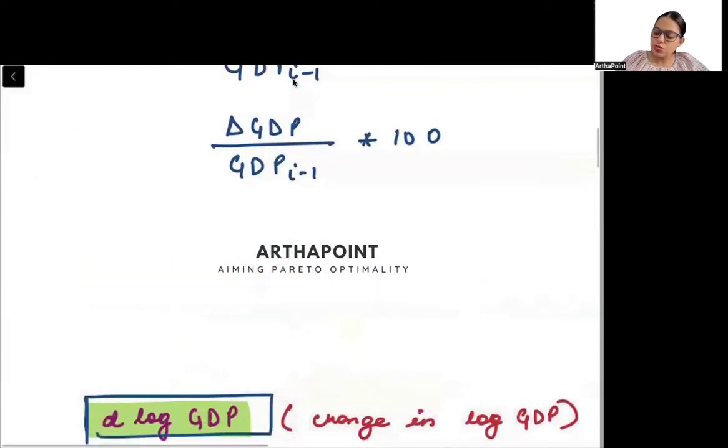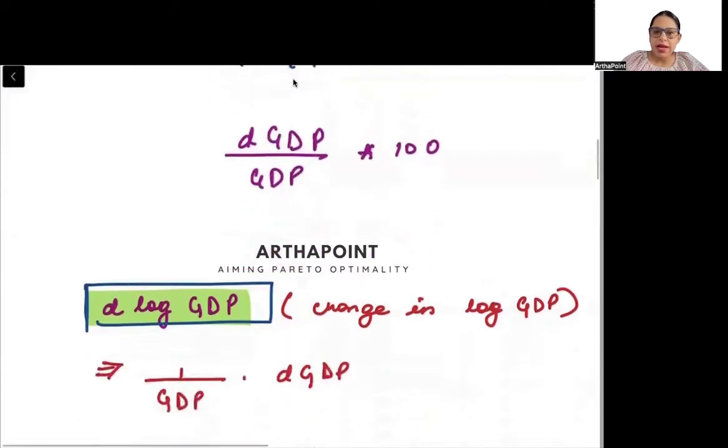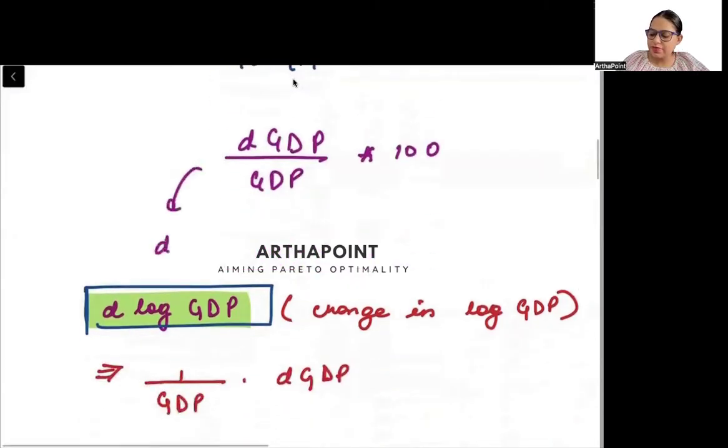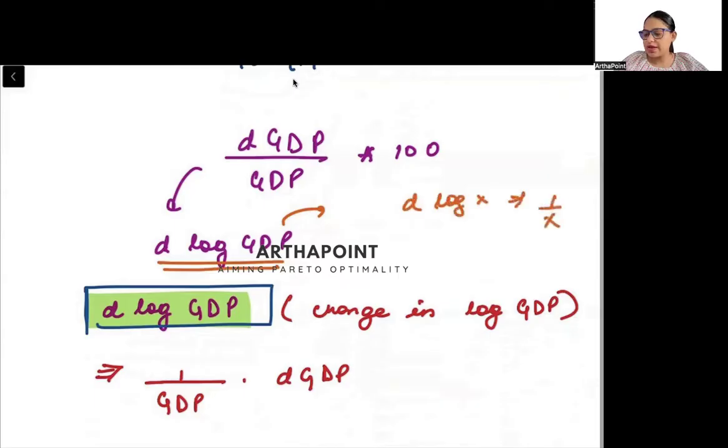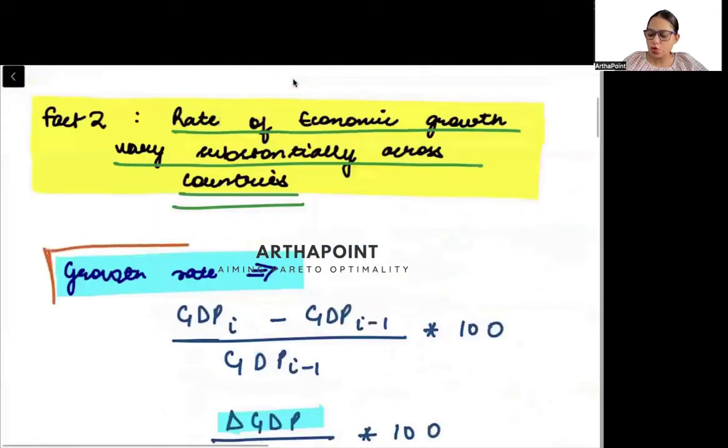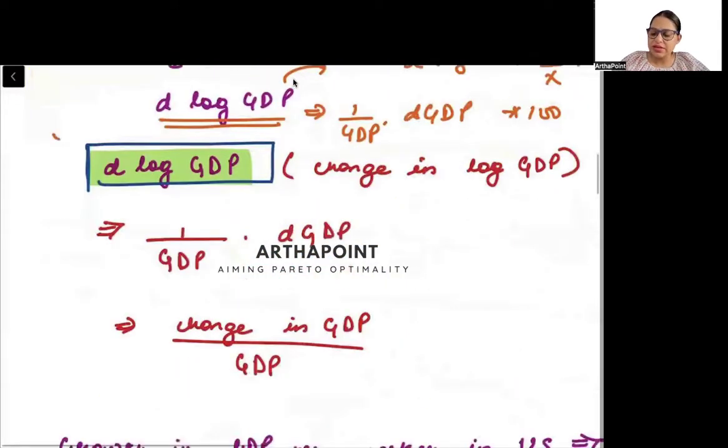Please note this down that change in GDP, if it is continuous, is DGDP by the base year GDP into 100. And this is nothing but the differentiation of log GDP. Because if we differentiate log GDP, differentiation of log X can be written as 1 by X DX. So, differentiation of log GDP will be 1 by GDP, DGDP into 100. So, we can go ahead and say that the growth rate can be defined as D log GDP.